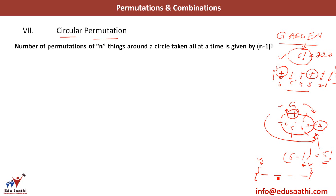The number of permutations of n things around a circle taken all at a time is given by n minus 1 factorial. So here I had six letters to place around a circle, and that is why the answer is 6 minus 1, which is 5 factorial. Let's do a practice question on this.